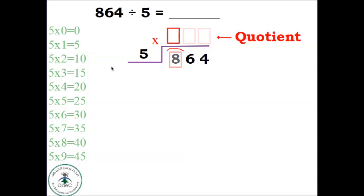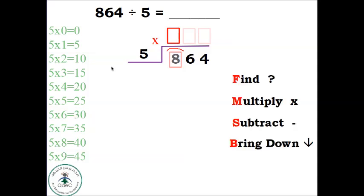We have four steps here: Find, Multiply, Subtract, and Bring Down. We repeat these steps. To remember them, we think of a family: Find starts with F like Father, Multiply starts with M like Mother, Subtract starts with S like Sister, and Bring Down starts with B like Brother.